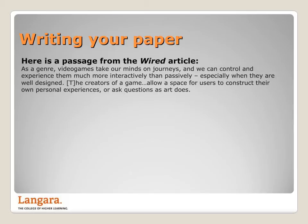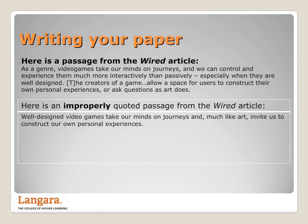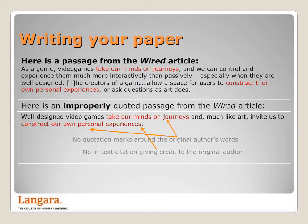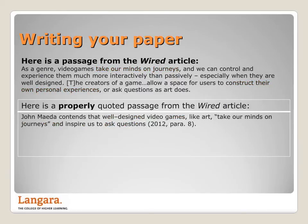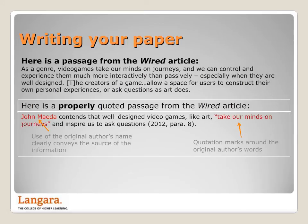Here is a passage from the Wired article as it appeared in the original text. And here is an improperly quoted passage. This passage is improperly quoted because there are no quotation marks around the original author's words. It's also missing an in-text citation giving credit to the original author. Here is a properly quoted passage from the Wired article. This is because the use of the original author's name clearly conveys the source of the information. As well, there are quotation marks around the original author's words, and there is an in-text citation giving credit to the original author.